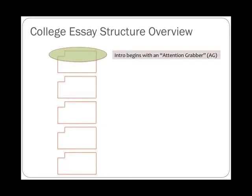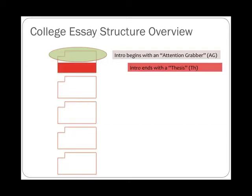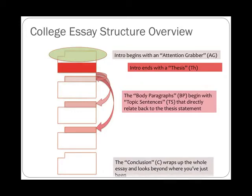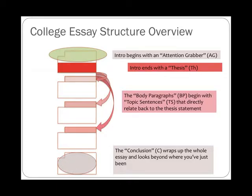When you look at your standard five-paragraph essay, your introduction's going to have two parts to it. It's going to begin with an attention grabber and then it's going to end with a thesis. You're going to have body paragraphs that begin with topic sentences. And those topic sentences are going to relate directly back to your thesis — they're going to grow right out of the ideas and parts of your thesis. Then your conclusion is going to wrap up the whole essay using a strategy and look beyond where you've just been. Make sure in your conclusion that you don't just say 'in conclusion' and restate your thesis, because that's a little too redundant and it's too low-level thinking for a college essay.